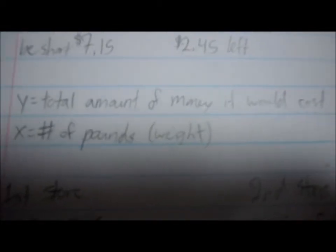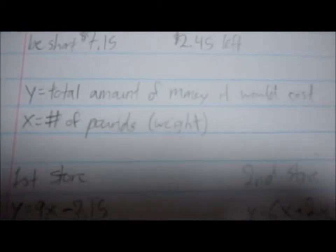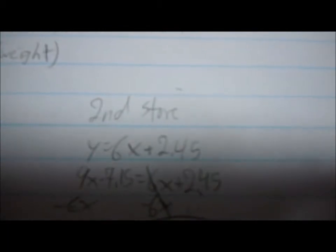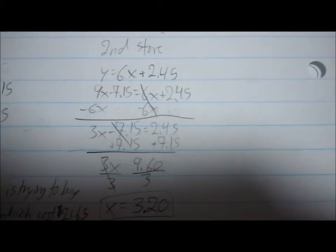And so I will be setting up an equation. Y would equal the total amount of money it would cost to buy the nails, and x would equal the number of pounds. So the first store's equation would be y equals 9x minus 7.15, and the second stores would be y equals 6x plus 2.45.